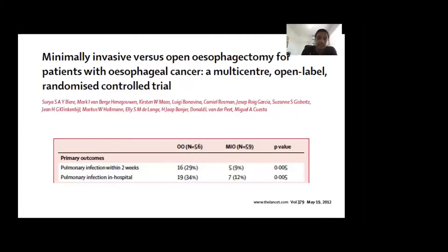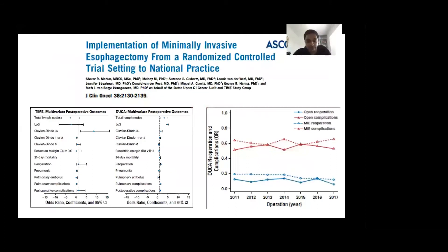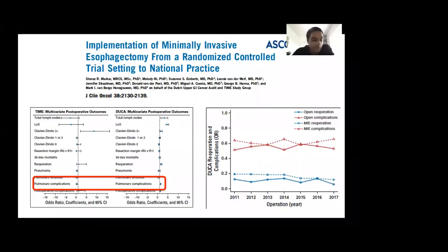To illustrate the point about external validity: the TIME trial, which we all know, showed a massive reduction in pulmonary complications associated with minimally invasive esophagectomy, leading to widespread uptake in the Netherlands. However, when we published in JCO comparing the TIME trial results to DUCA data following the trial, we showed there was actually an increase in pulmonary complications in the minimally invasive group. So this trial had no external validity when the technique was adopted by the average surgeon operating on the average patient. That's really important when thinking about whether one technique is better than another — is it really better, or is it just that you have an excellent surgeon performing the technique? I would argue we currently can't tell.